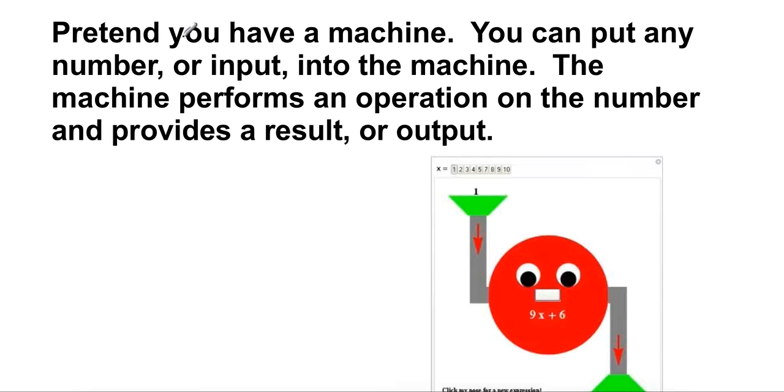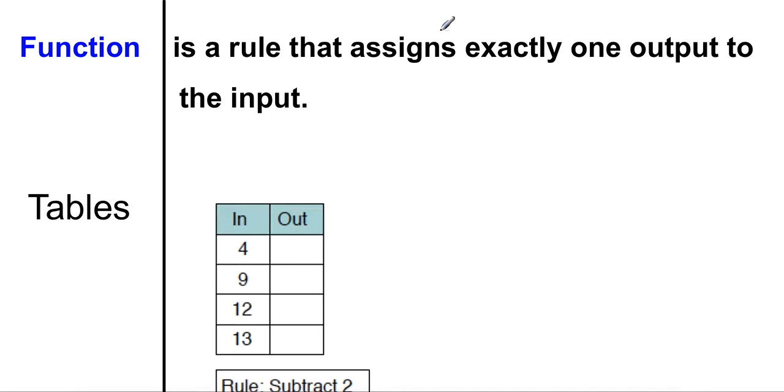Alright, let's look at what we're going to do next. Pretend you have a machine. You can put any number or input into the machine. The machine provides or performs an operation on the number and provides a result or an output. So let's first get what a function is. A function is a rule. That's what I want you to write. But what it does is assigns one output to the input.